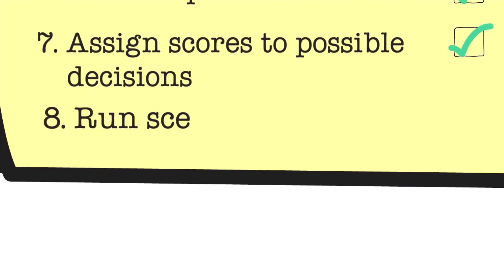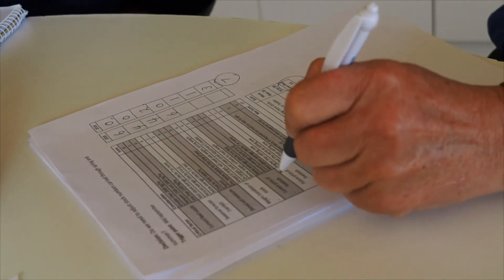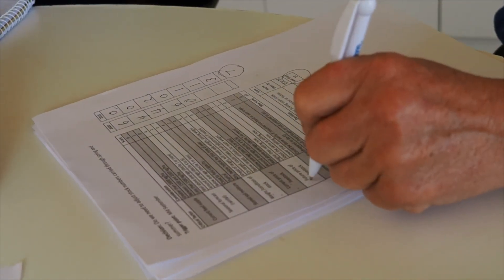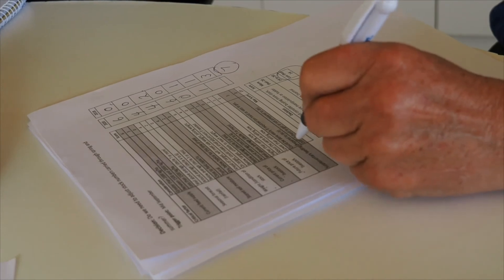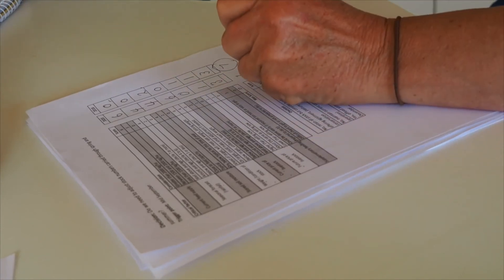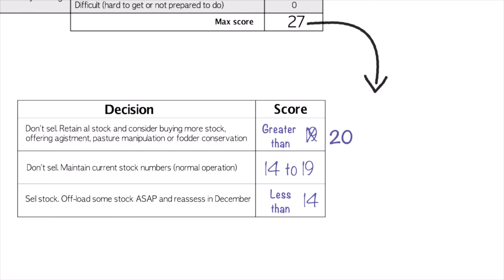The last step is to start running some scenarios. Think about previous years where you know the outcome — score those conditions and see if the scores add up to the right decision in hindsight. If they don't, adjust your scores either within the matrix or within the decision table. In this example, after running some scenarios, we changed the best critical factor score from 19 to 20. If you wanted to take less risk about being stuck with animals as the season turns bad, your decision score to sell might be 16 or 17 instead of 14.